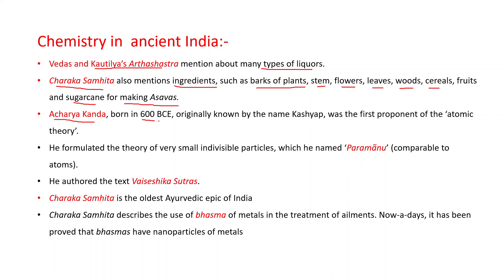Acharya Kanad, born around 600 BCE, originally known by the name Kashyap, was the first proponent of the atomic theory. He formulated the theory of very small indivisible particles which he named paramanu, comparable to atoms. He authored the text Vaisheshika Sutras.